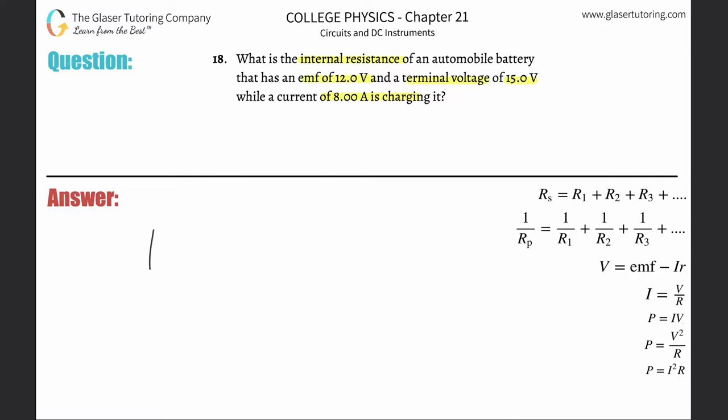The same principles will apply. So imagine you have a little battery, you got your two terminals here. Over those two terminals, they told you that the voltage is going to be 15 volts. And then they tell you that the EMF inside of the battery is going to be 12 volts.